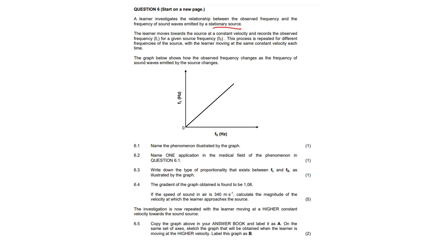The learner is moving towards that source at a constant velocity and records the observed frequency for a given source frequency. The process is repeated for different frequencies of the source with the learner moving at the same constant velocity each time. The graph below shows how the observed frequency changes as the frequency of waves emitted by the source changes.